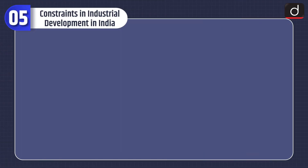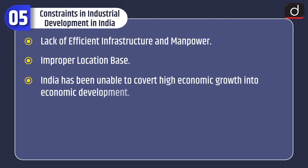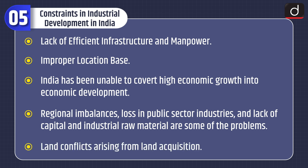Now let's have a look at constraints in industrial development in India. These include lack of efficient infrastructure and manpower, improper location base, India's inability to convert high economic growth into economic development, regional imbalances, losses in public sector industries, lack of capital and industrial raw material, and land conflicts arising from land acquisition.